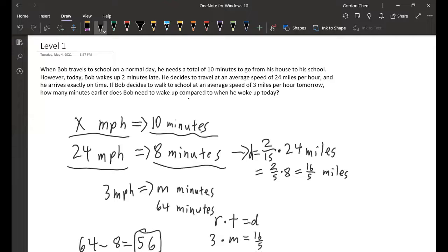When we use speed times time equals distance, we can find his distance, which is 16 over 5 miles.